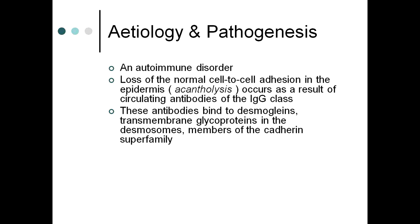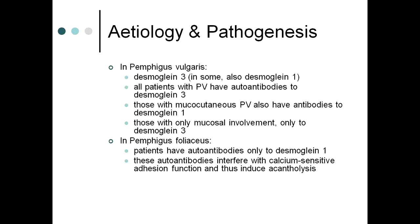Pemphigus is an autoimmune disorder. Acantholysis occurs due to circulating IgG antibodies that bind to desmoglines — transmembrane glycoproteins in desmosomes that are members of the cadherin superfamily. In pemphigus vulgaris, the antigen is primarily desmoglein 3, though sometimes desmoglein 1. Desmoglein 3 is predominant in mucosa while desmoglein 1 is more common in skin. All pemphigus vulgaris patients have autoantibodies to desmoglein 3.